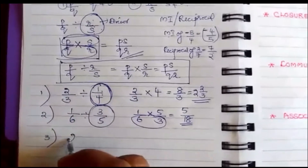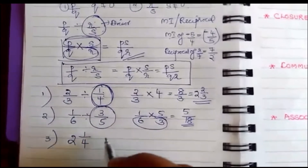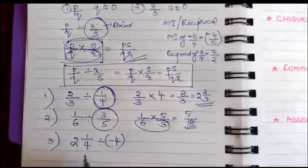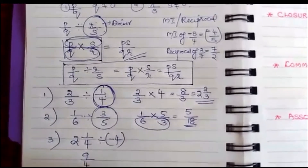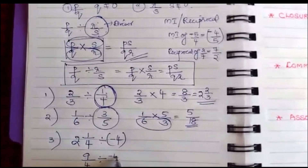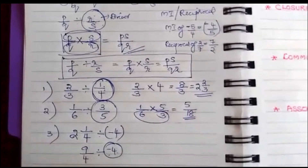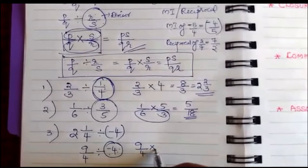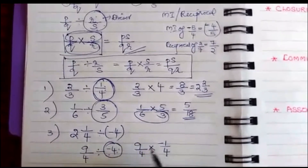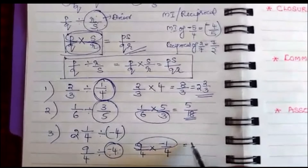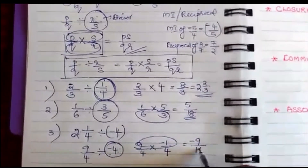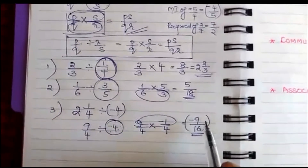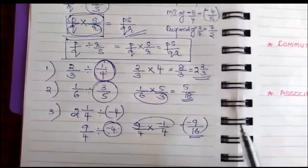Third example: 2 and 1/4 divided by -4. First, convert 2 and 1/4: 4×2 = 8, so it is 9/4. Then 9/4 divided by -4. The multiplicative inverse of -4 is -1/4, so 9/4 × (-1/4) = -9/16.